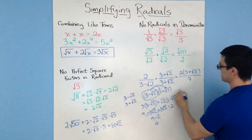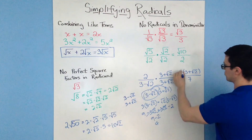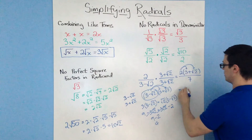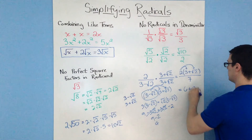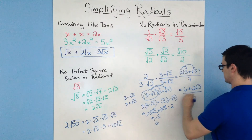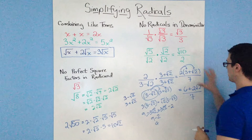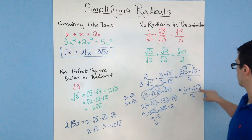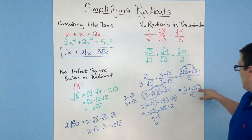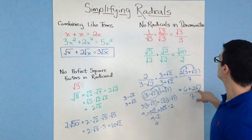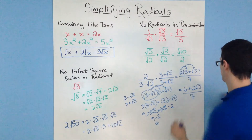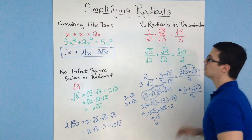We can simplify the top by distributing the 2: 2 times 3 is 6, and 2 times root 2 is 2 root 2, divided by 7. Check all the other rules — no perfect square factors in the radicand, which there aren't — and everything is simplified. So 6 plus 2 times the square root of 2, all over 7, is our final answer.